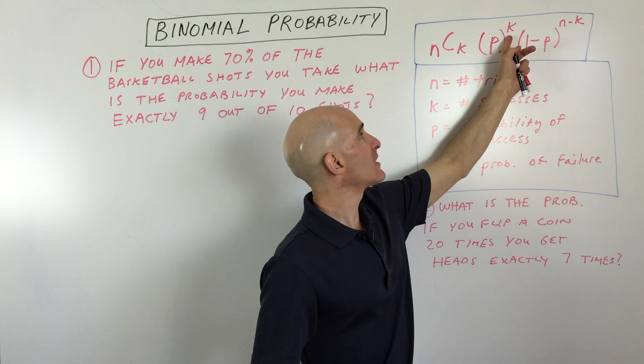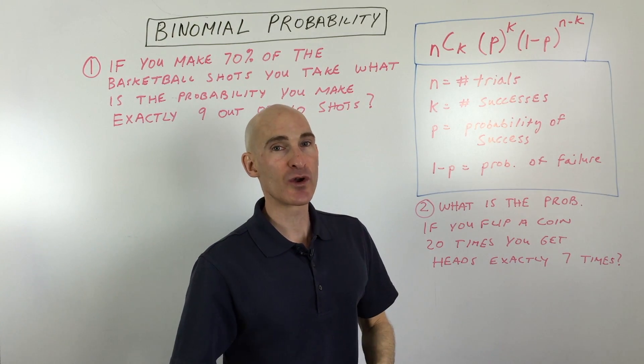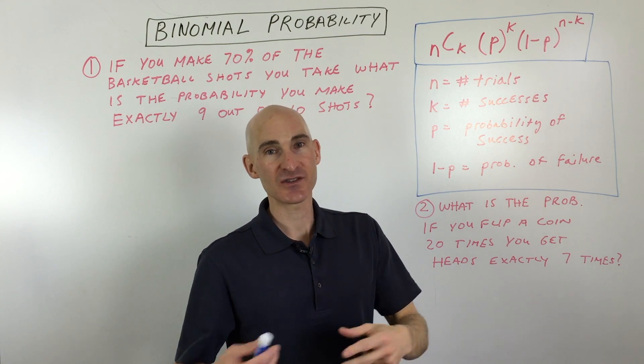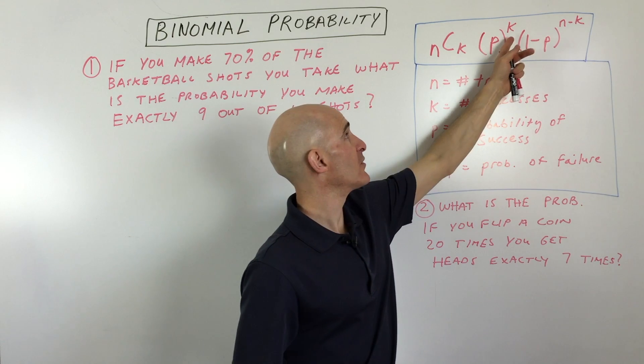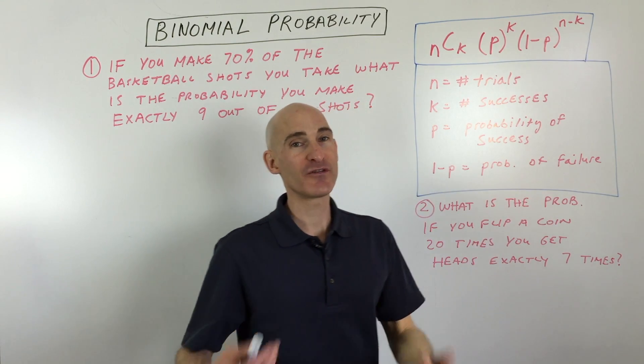And so k here represents the number of successes. So you're wondering the probability that you make nine out of 10 baskets, or five out of 10 baskets, that's the number of successes. And then n minus k, that would be the number of failures.